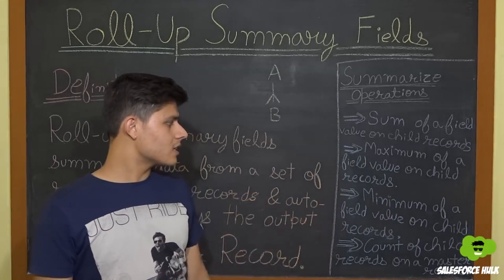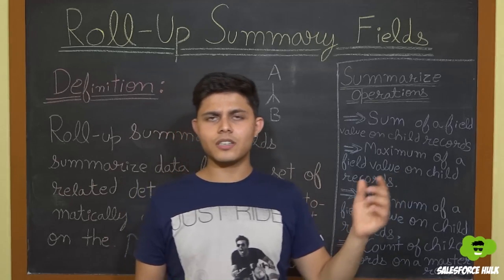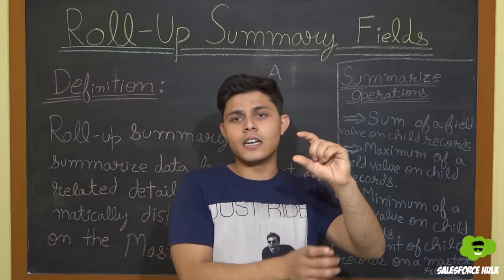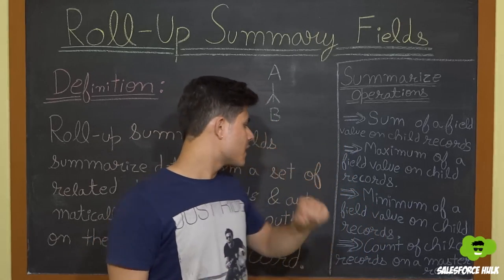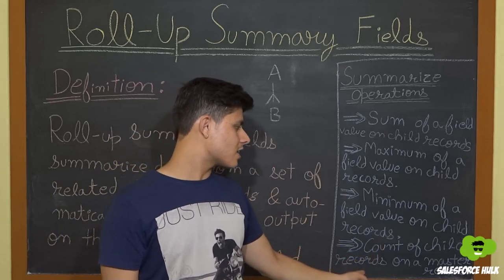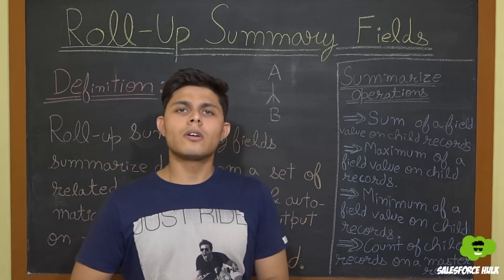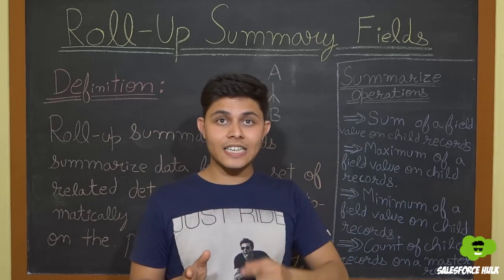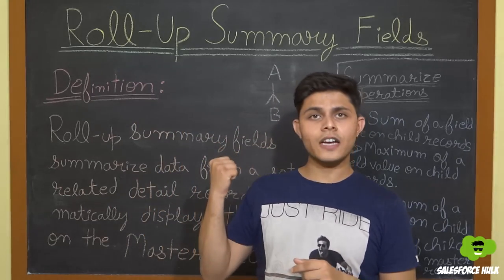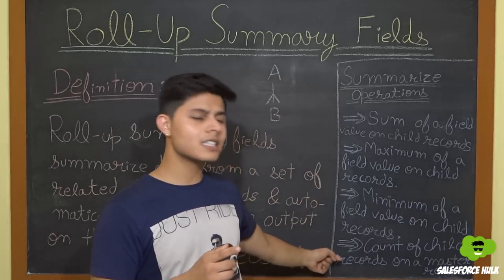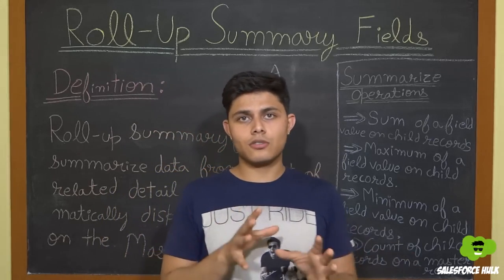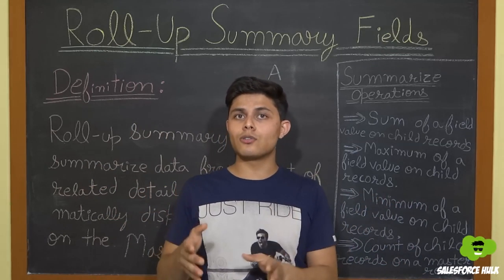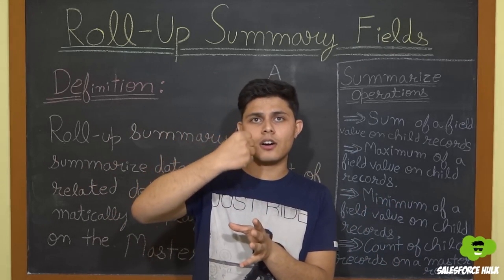The third operation is minimum of a field value on the child object records. In that situation, you'll get the minimum value of the amount field across all records of object B. The fourth and very important operation is count of child records on a master record. If you want to get the number of child records related to a master, you'll create a Rollup Summary Field and select the operation as count. In count, you do not have to select any field to aggregate — you simply get the count of child records associated to a single master record.